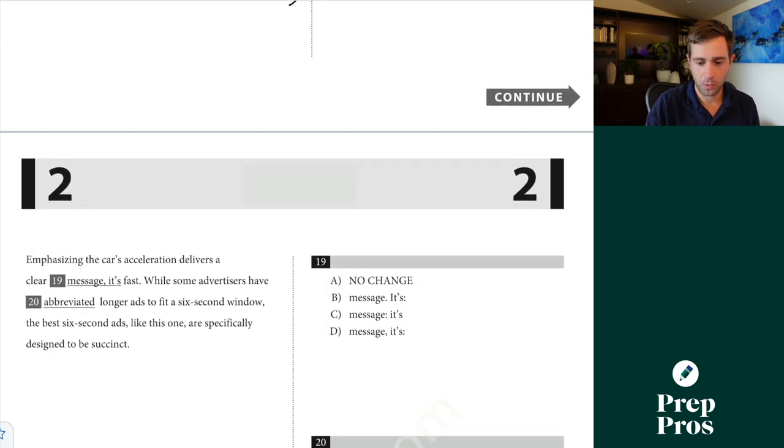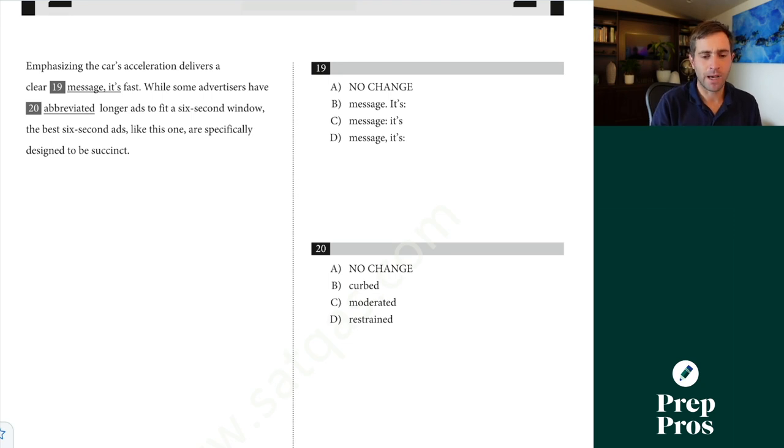So once again, skim back through this a little bit on the super quick side for the sake of the video here. Emphasizing the car's acceleration delivers a clear message, independent clause. It is fast, another independent clause. Now this is wrong. It is is not an independent clause, so we can get rid of B. C is going to be our correct answer. We can use colons to join two independent clauses when the second one is giving explanation, definition, clarification for the first, and that's what we see here in C. This improper use of the comma here, and we no longer have an independent clause before the colon. If we start saying it is, we can't stop reading there.